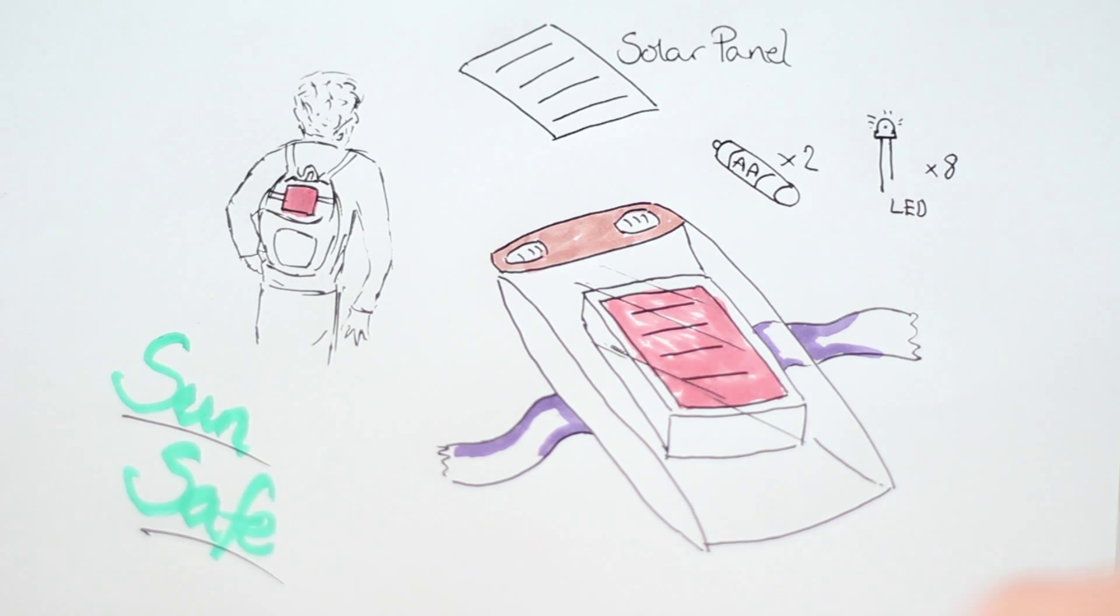The idea is that it's a personal solar safety light. Now it could be used on a person's backpack as seen in this image here or it could be put on a dog collar or on anything where you want it to be visible at night.